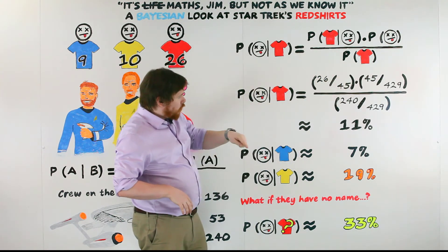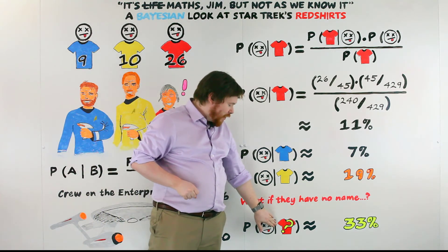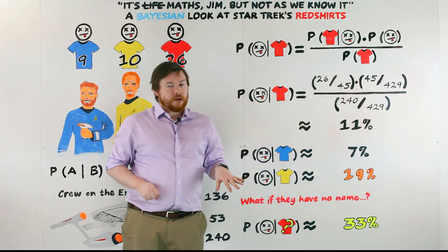So if we do that and actually go through the process of updating that prior, if the red shirt wearing character does not have a name, then that probability shoots up to 33%.